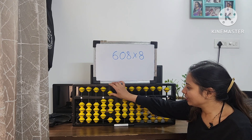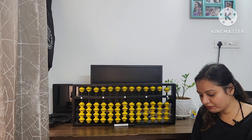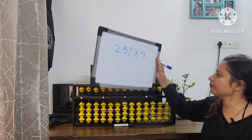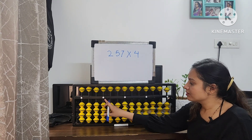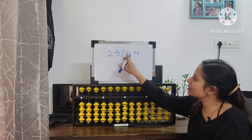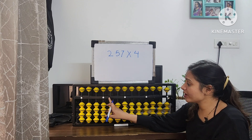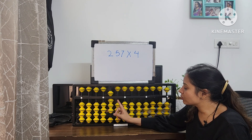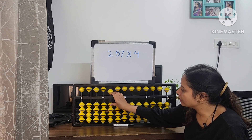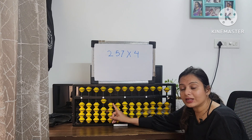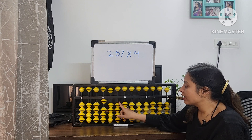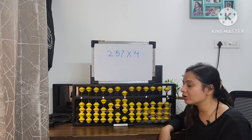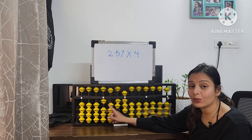Next question: 257 multiplied by 4. Starting from the 4th rod: 4 twos are 8 — place 0 here and 8 in the next rod. Then 4 fives are 20 — we can't take 2 simply, so we apply a formula: place 2 and 0. So the next number starts from there. Then 4 sevens are 28 — place 20 here and 8 in the units rod. Our answer is 1028.